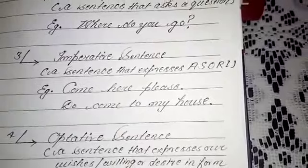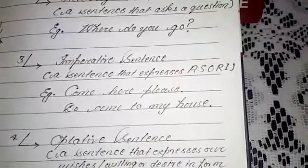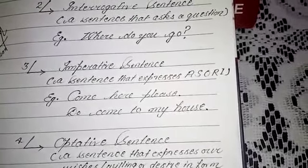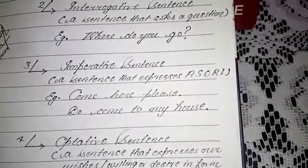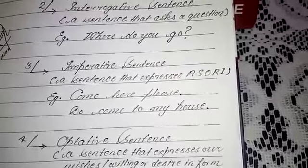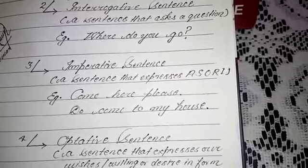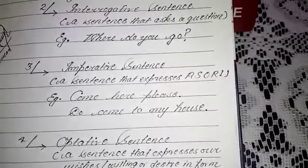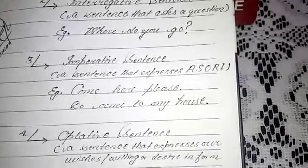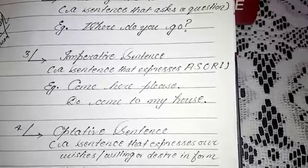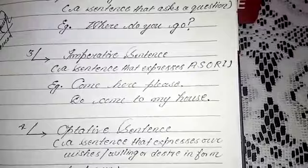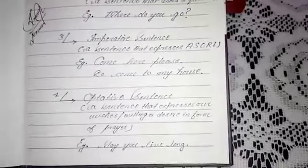For example: 'Come here, please' — that is a request. 'Do come to my house' — that is an invitation. 'Go there' — that is advice. 'Get out of my room' — that is an order.